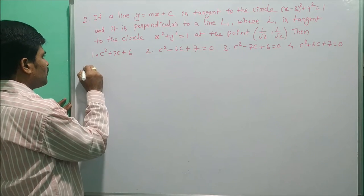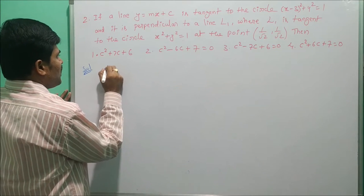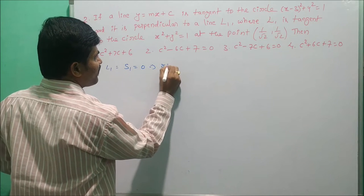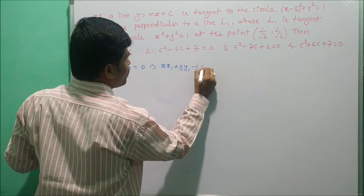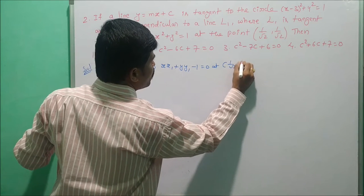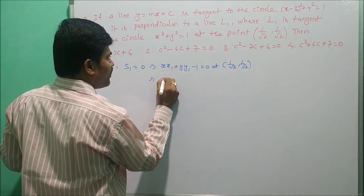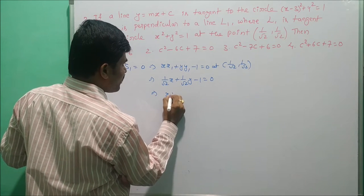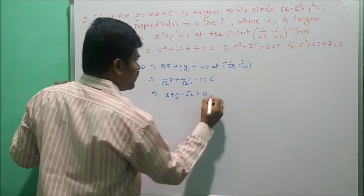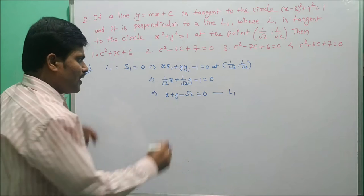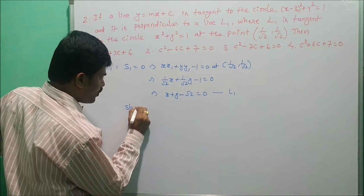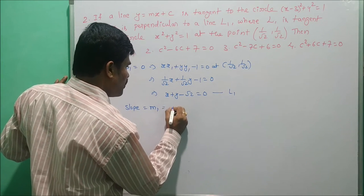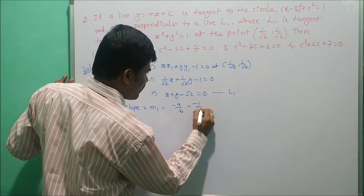The solution: L1 means S₁ = 0, which implies xx₁ + yy₁ - 1 = 0 at (1/√2, 1/√2). This gives (1/√2)x + (1/√2)y - 1 = 0, that is x + y - √2 = 0, which is L1. The slope m₁ = -a/b = -1/1 = -1.